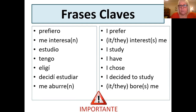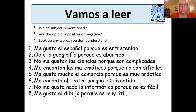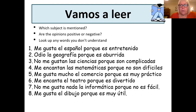Okay, so assuming that's been done, we're going to move on to a reading here. It should take you about five minutes. Please put the title Vamos a leer. Then there are eight sentences — I want you to have a look and see if you can determine which subject is mentioned, whether the opinions are positive or negative, and make sure you look up any words you don't understand. Most of these are straightforward. Can you please use a red pen to correct any work you need to. Five minutes please to do this exercise.